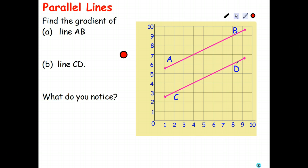So we're going to start by finding the gradient of each of those lines. The easiest way to do that is to pick a couple of points on each line. So I'll pick A and B itself on that line, and I'll pick C and D on that line.